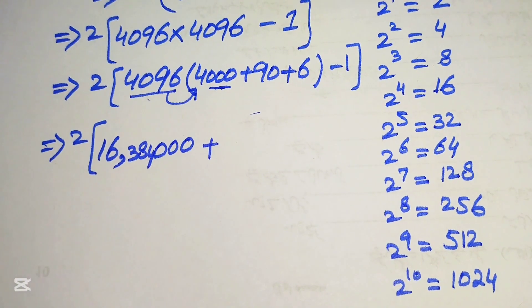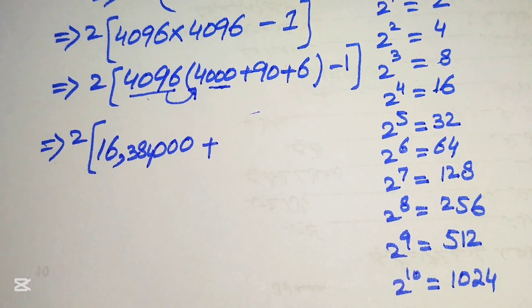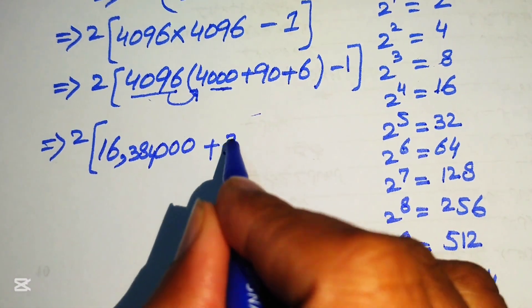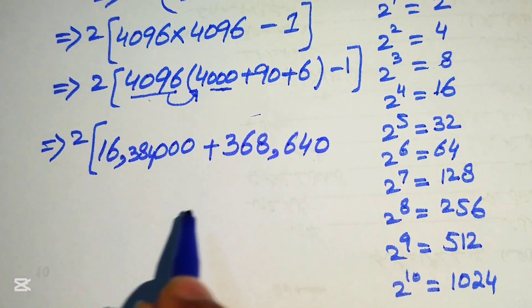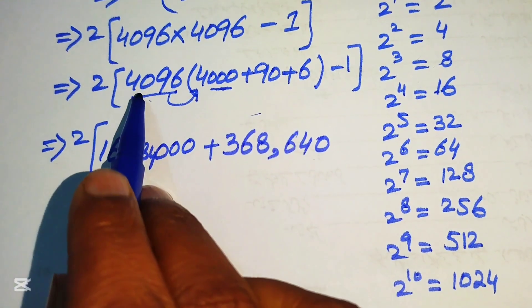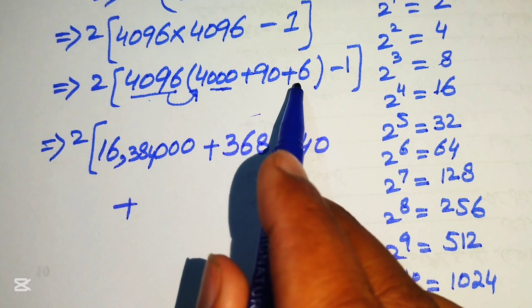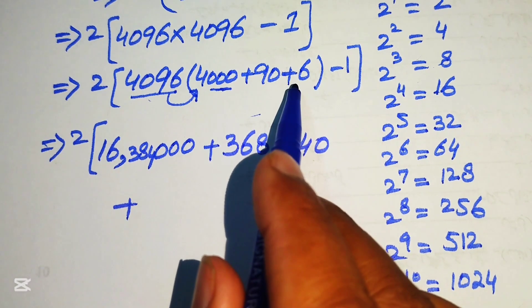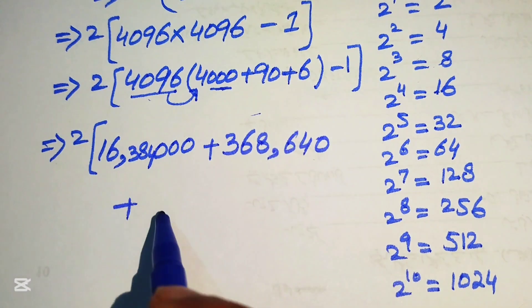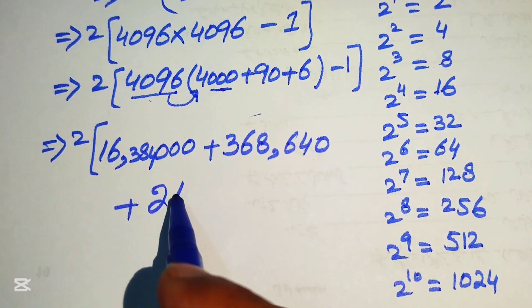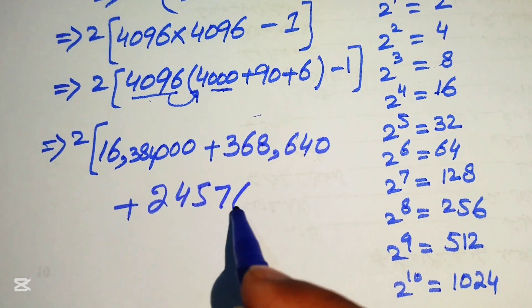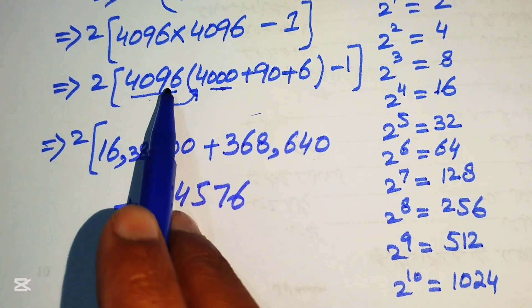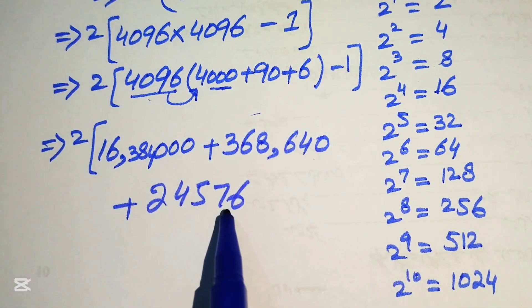Now multiply 4096 by 90 using the same approach: the result is 368,640. Then multiply 4096 by 6 to obtain 24,576.